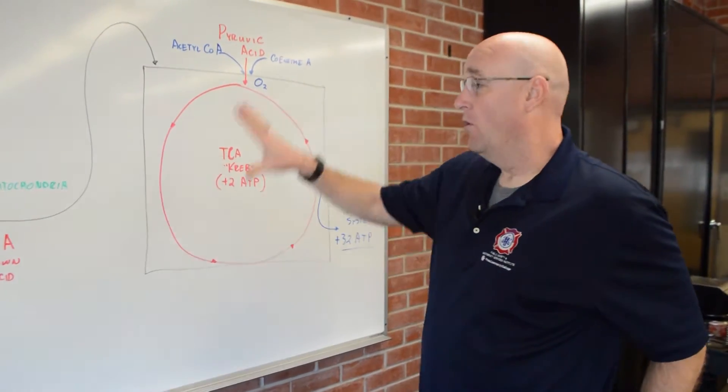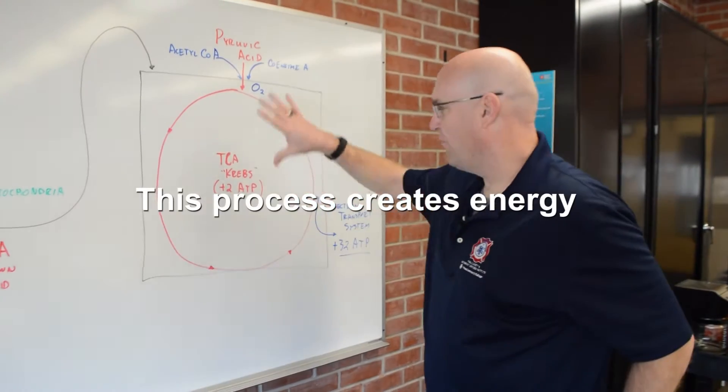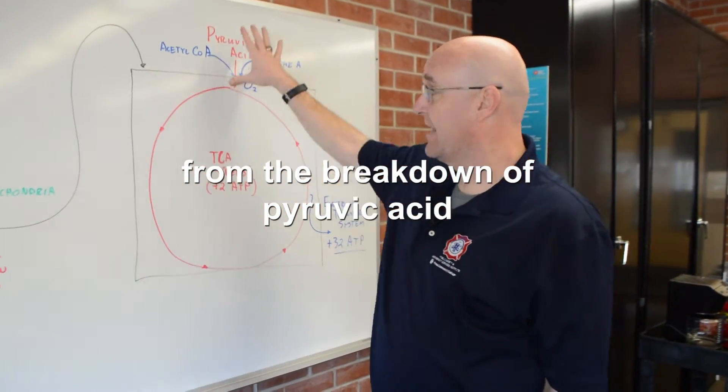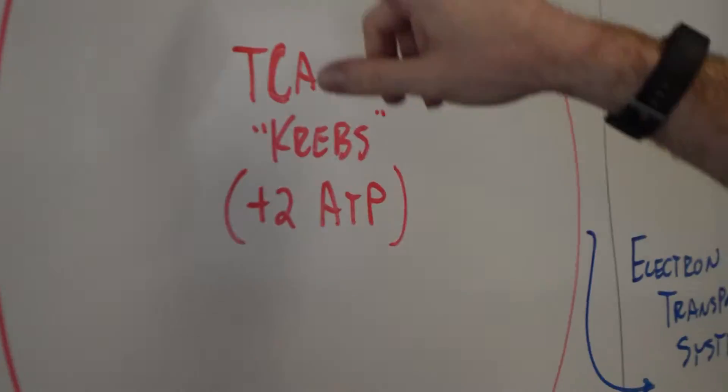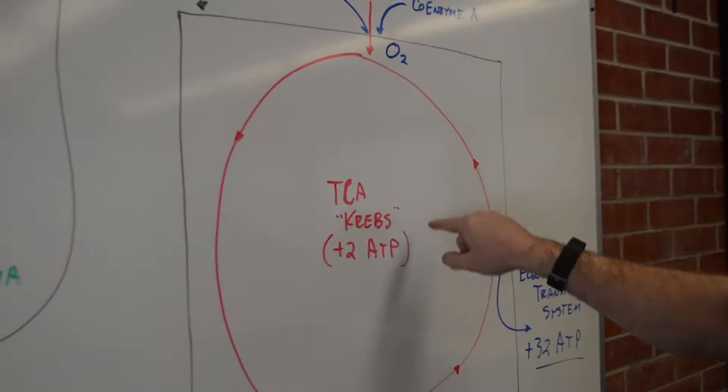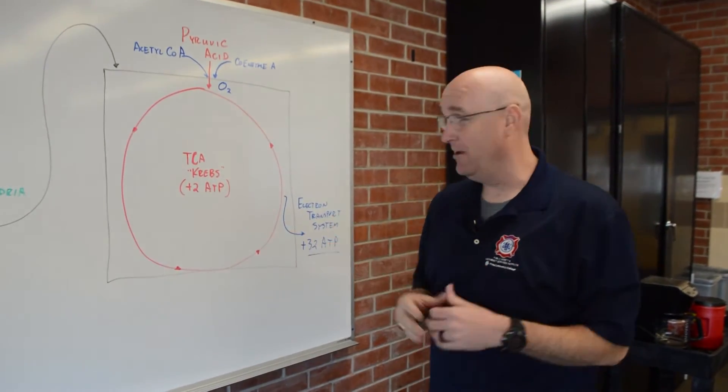This process with all the other coenzymes and the cofactors that we have creates energy. It synthesizes energy from the breakdown of pyruvic acid. And we have two revolutions of this cycle per molecule, and we create two ATP. And you're like, well, that's not a lot of ATP.